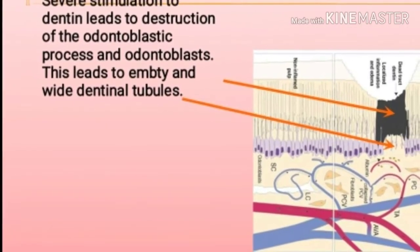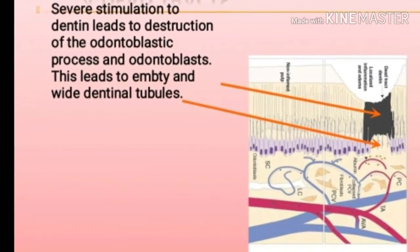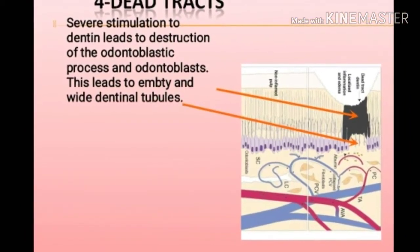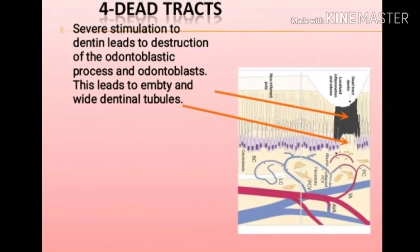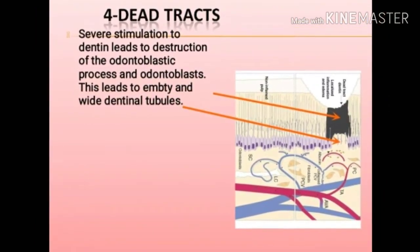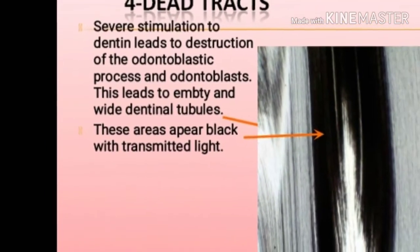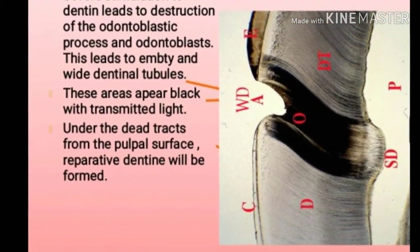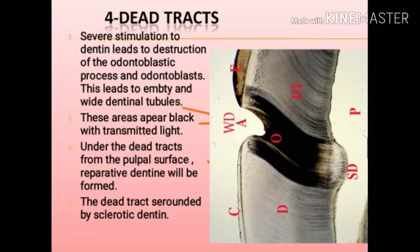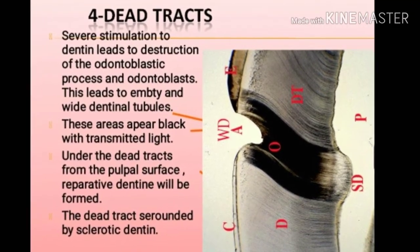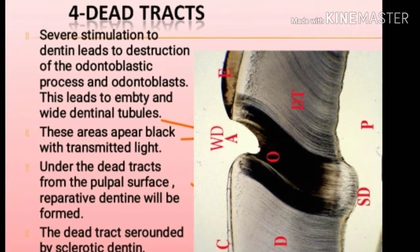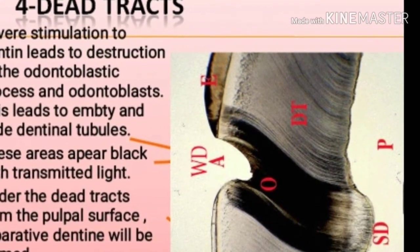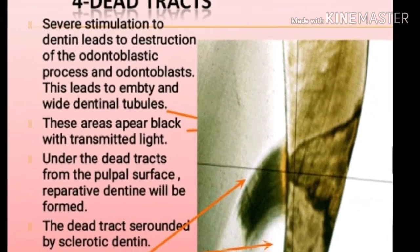Dead tracts: Severe stimulation to dentine leads to destruction of the odontoblastic processes and odontoblasts, resulting in empty and wide dentinal tubules. The figure shows the dead tracts — the black area indicates localized inflammation and edema compared with non-inflamed pulp. These areas appear black with transmitted light. Under the dead tracts from the pulpal surface, reparative dentine will be formed. The dead tracts surrounded by sclerotic dentine are also shown in the figure, which illustrates the enamel, dentine, pulp, odontoblasts, sclerotic dentine, and dentinal tubules.